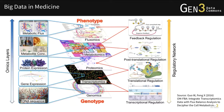High-throughput omics technologies and computational approaches enable systematic exploration of complex interactions in biological systems. Integrative analysis of genomics, transcriptomics, proteomics, and so on provides an insightful overview of regulatory networks in cells, organisms, and populations.